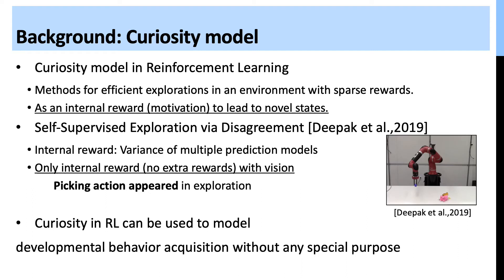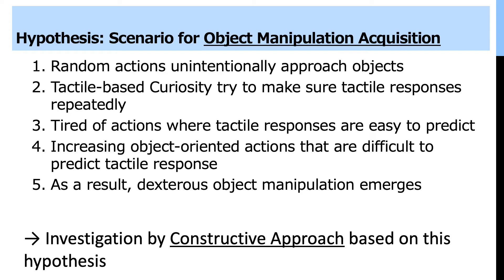One of these methods is self-supervised exploration via disagreement by Deepak. The internal reward of that method is defined by the variance of multiple prediction networks with random initial weights. Through training, only internal rewards with visual information induce picking actions during exploration. We think this kind of method can be used to model human developmental behavior acquisition without any special external purpose.